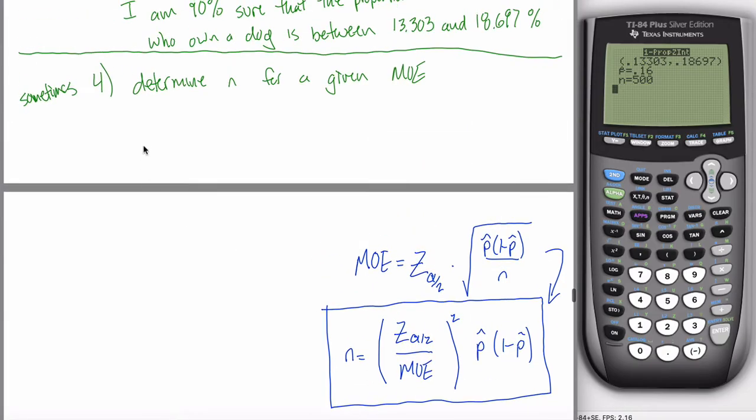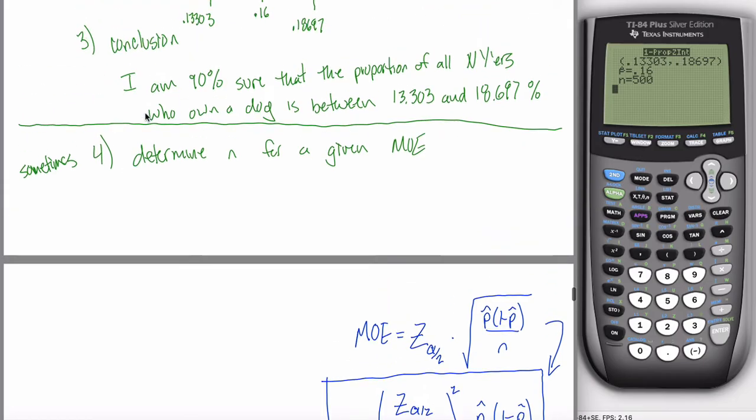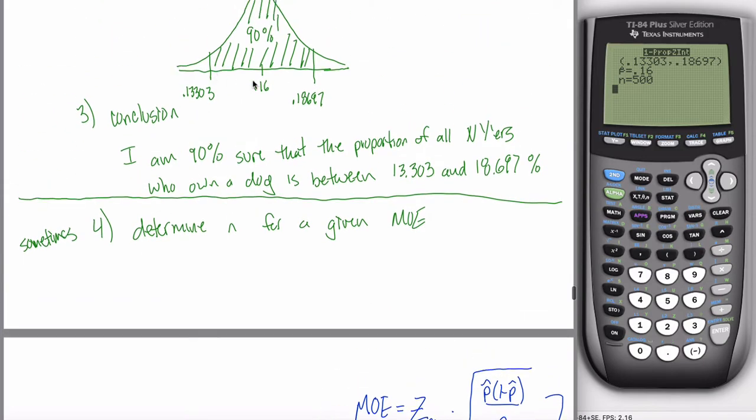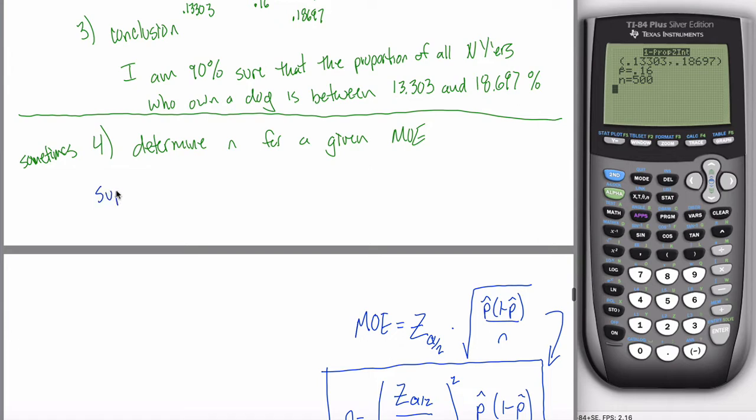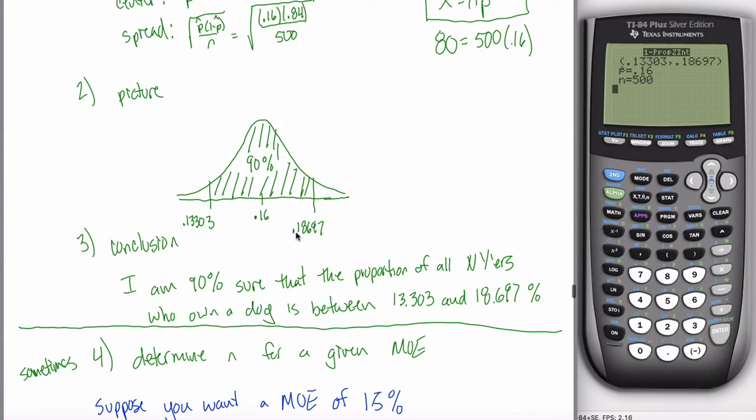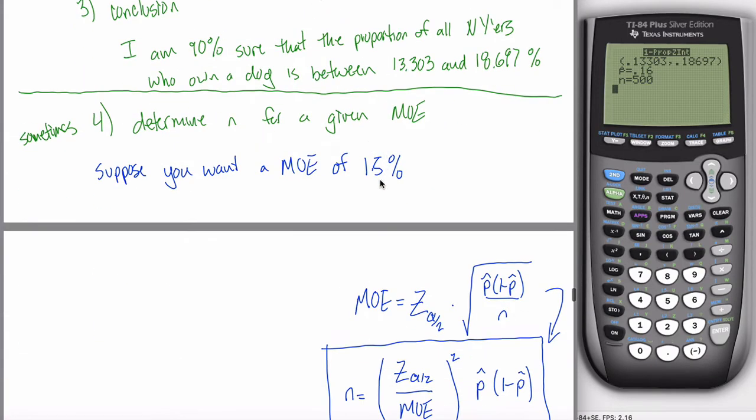Suppose you're doing a question like number four here. What number four might say is, you already created your confidence interval. As I talked about, the margin of error in this confidence interval is 2.697%. Suppose you want a margin of error of, I don't know, 1.5%. It was currently 2.697%. I want it to just be 1.5%.